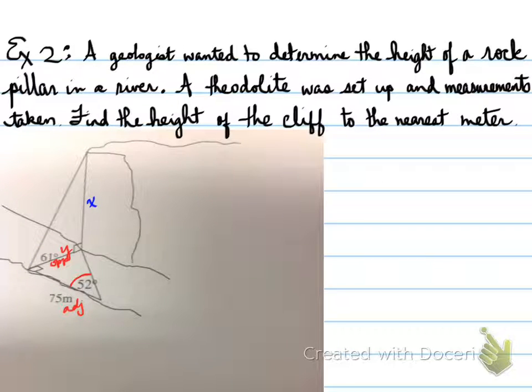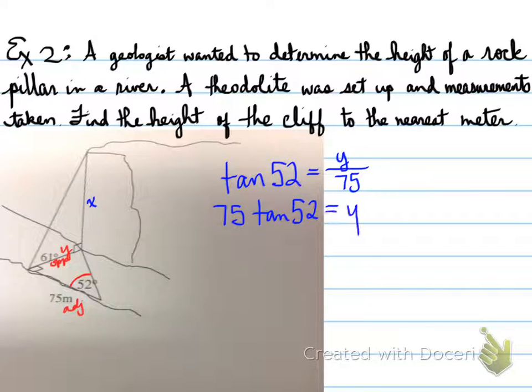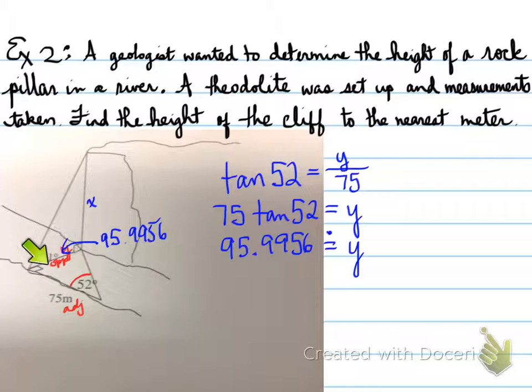Opposite and adjacent is tangent. So we're going to use tangent of 52 equals y over 75. We're going to multiply because the unknown is on the top, and that gives us 95.9956. So that is our value. It's the approximate value of the width of the river. This piece will allow us to find x, so we need to find this side before we can find x.